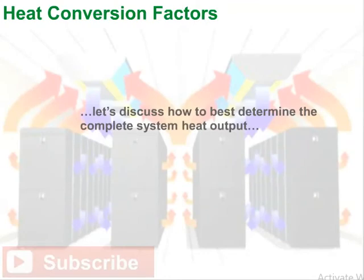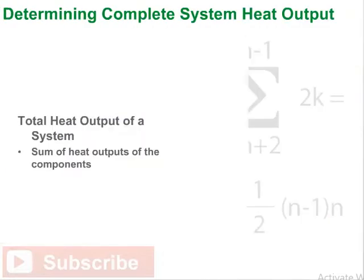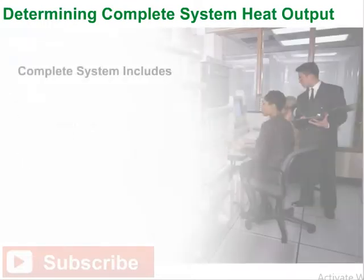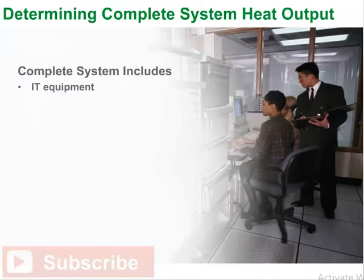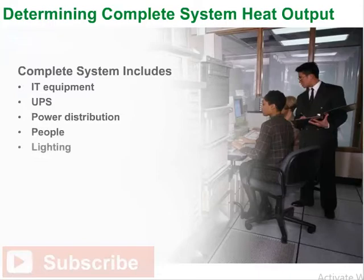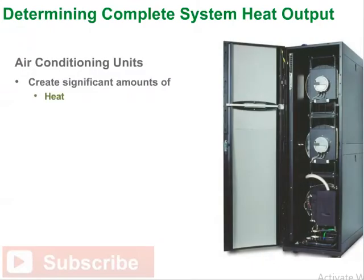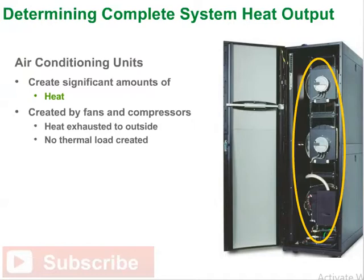Let's discuss how to best determine the complete system heat output. The total heat output of a system is the sum of the heat outputs of its components. The complete system includes the IT equipment plus other items such as UPS, power distribution, people, lighting, and air conditioning units. It's important to note that air conditioning units in the data center create a significant amount of heat from fans and compressors.